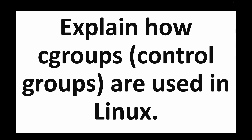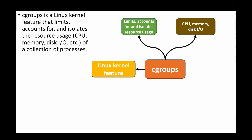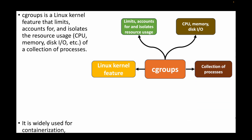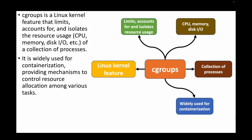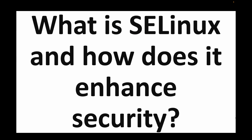The next question is: explain how cgroups, or control groups, are used in Linux. Cgroups are a Linux kernel feature used to limit, account for, and isolate the usage of resources such as CPU, memory, or disk I/O for a collection of processes. They are mainly used with containerization technologies like Docker and Kubernetes, and provide mechanisms to control resource allocation among various tasks depending on the container running.